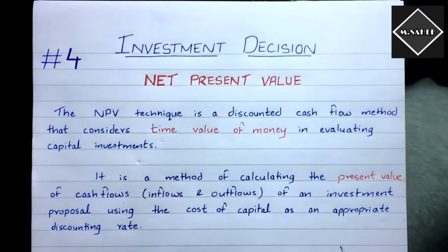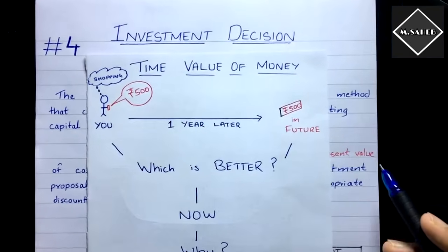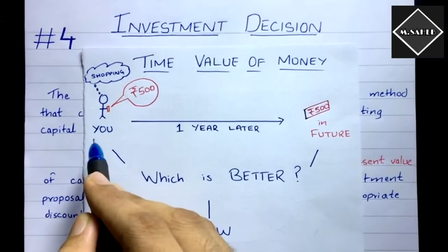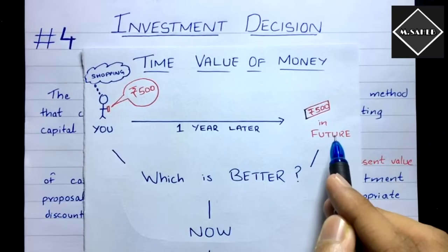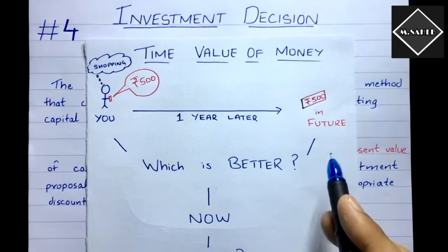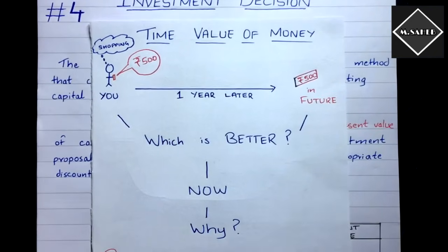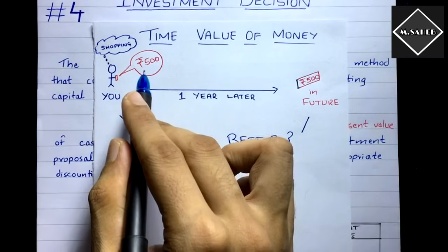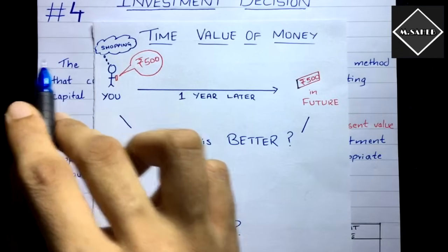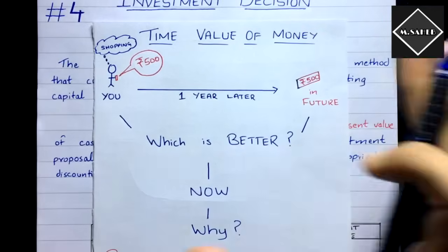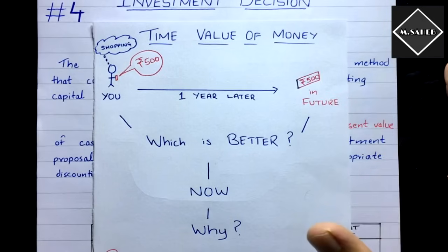Let's understand the time value of money with a small scenario. Which is better: to have 500 rupees today, or to have the same 500 rupees a year later in the future? Of course, now is better. Why? Because the purchasing power of money falls down as time passes. Whatever you can purchase today with 500 rupees, you wouldn't be able to purchase the same thing in the future.